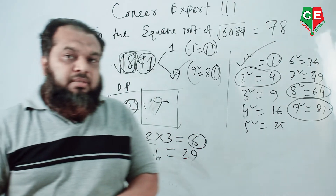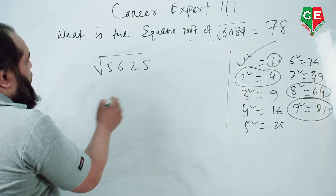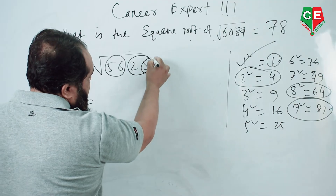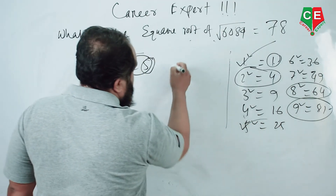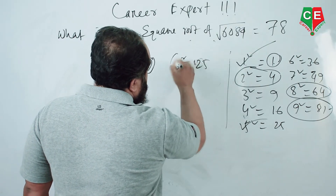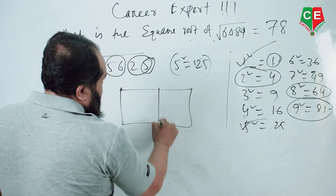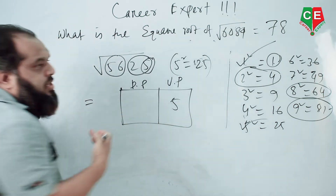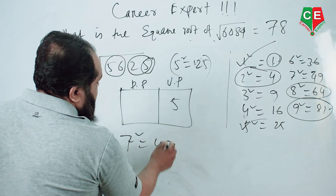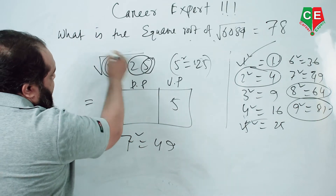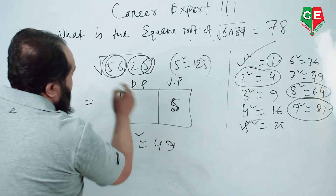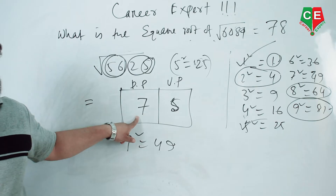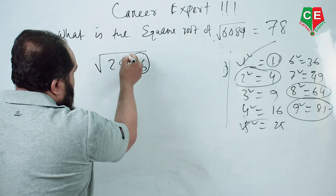Now look at another example: square root of 5625. First, make two pairs: 56 and 25. The unit place is 5. Only 5 squared equals 25, so the unit place will only be 5. Then look at 56 — the square term below 56 is 7 squared equals 49, which is below 56. So it will always be 5 in the unit place and 7 in the tens place. The square root of 5625 is 75.